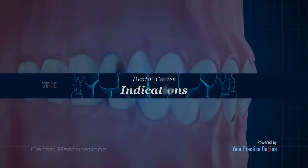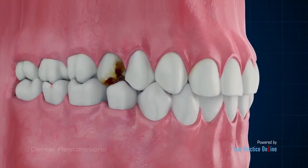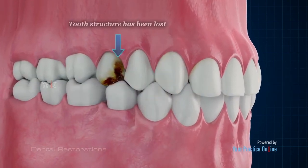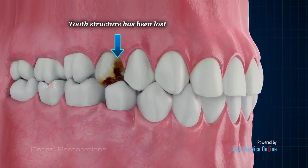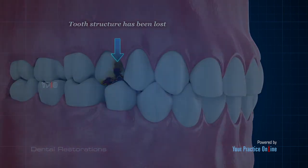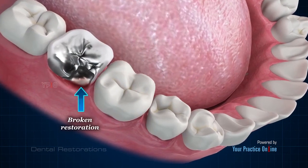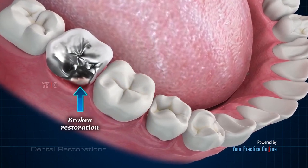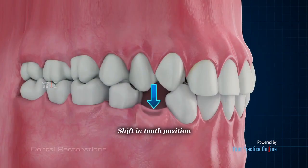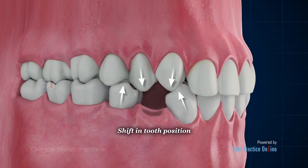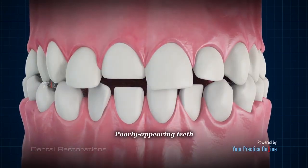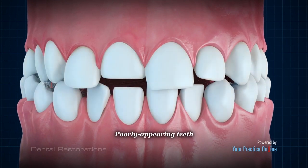Indications: Some indications for dental restorations include tooth structure that has been lost due to decay or damage, a previously placed restoration that has deteriorated or broken, missing teeth that can prevent you from chewing properly and cause neighboring teeth to shift out of position, leading to chipped or worn down teeth. Poorly appearing teeth can also alter your appearance and affect your confidence.